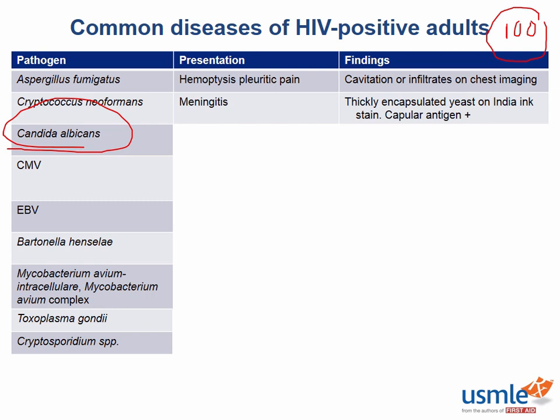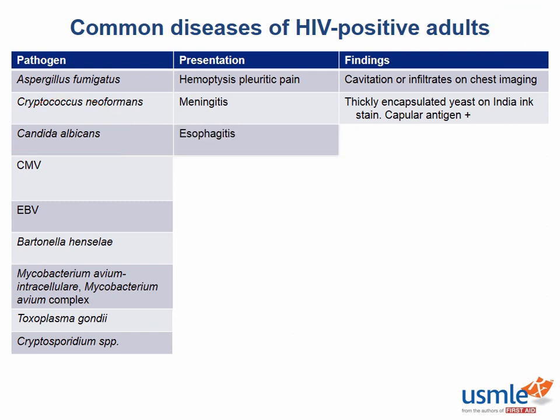For Candida albicans, at a CD4 count around 500 you'd see oral thrush. In folks with CD4 counts less than 100, as AIDS advances, Candida can infect other parts of the body and cause particularly important esophagitis. On endoscopy, you'll see white plaques similarly to what you see in the oral cavity, and pseudohyphae on the biopsy specimen.